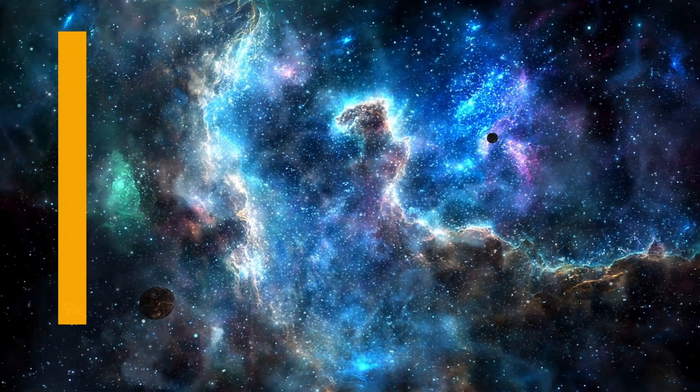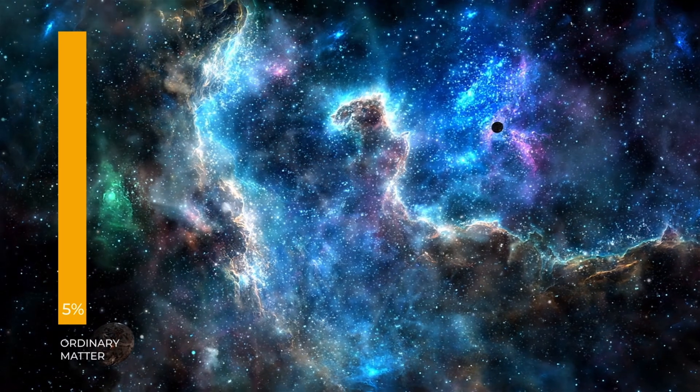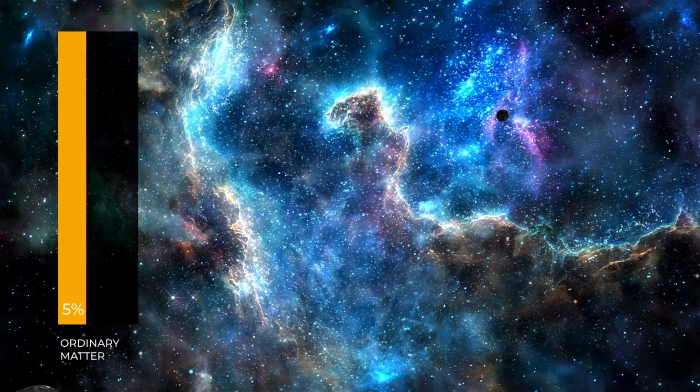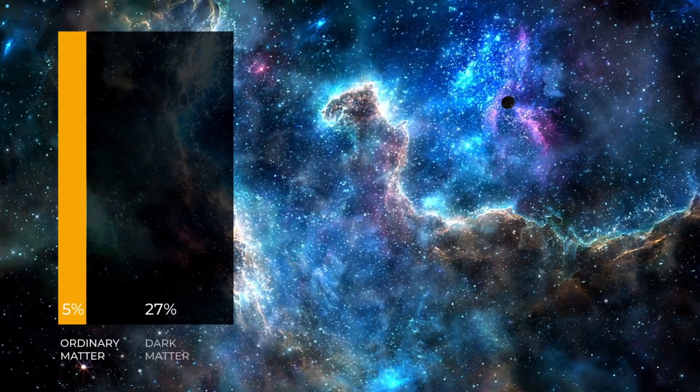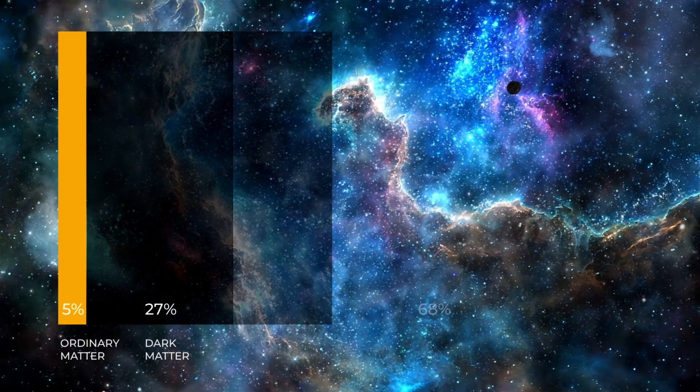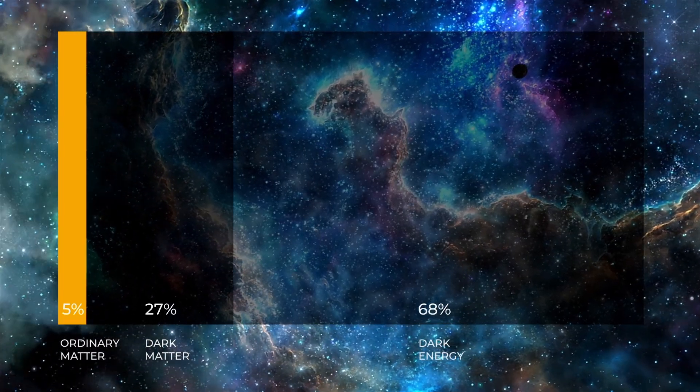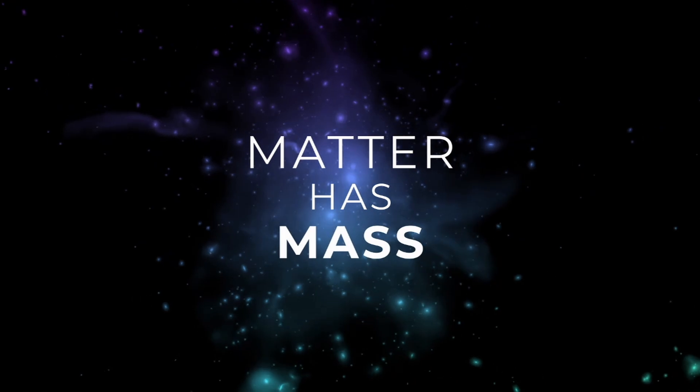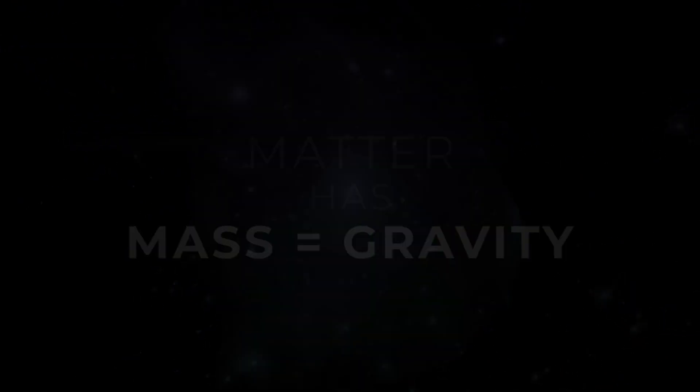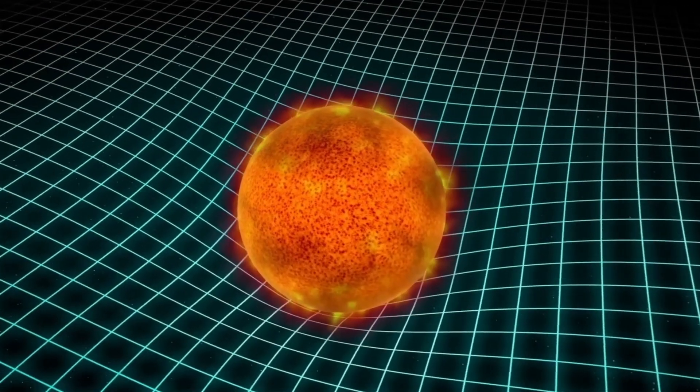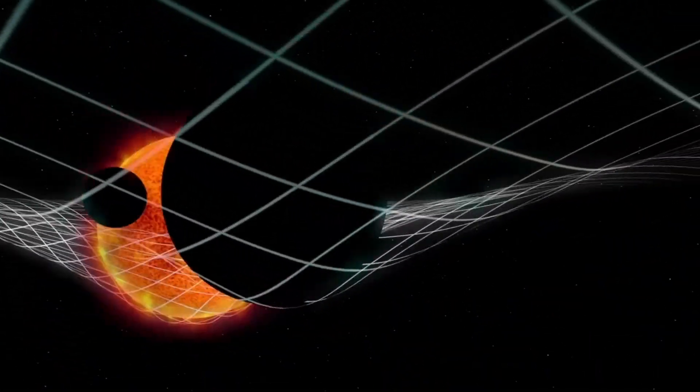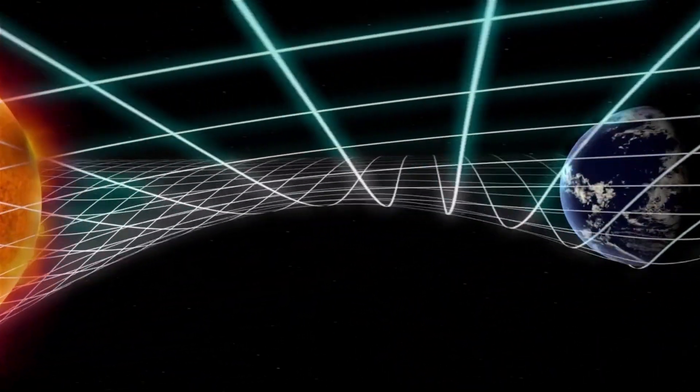Ordinary matter makes up only 5% of the total matter and energy content of the universe. The rest is dark matter, approximately 27%, and dark energy, which makes up about 68%. Matter has mass, and mass generates gravity. Both ordinary matter and dark matter are influenced by gravity, and both can influence the gravitational forces of other objects.